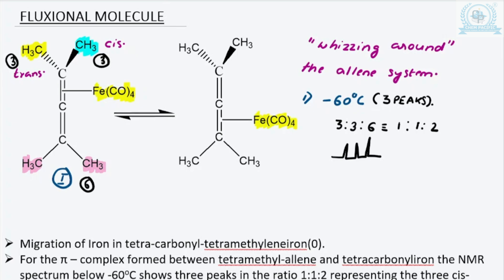Now when the molecule is rigid at low temperature, what happens when you increase the temperature? With the increase of temperature the spectrum collapses to a single resonance, representing the average environment of all 12 hydrogens over the allyl pi system.